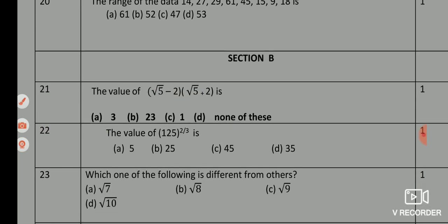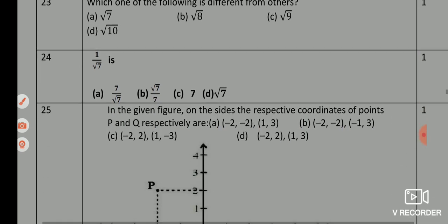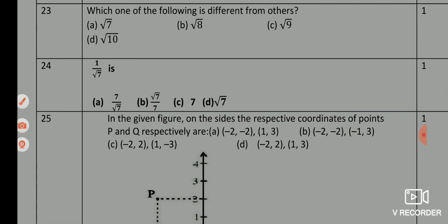Now Section B: Q21 — correct answer is option C, 1. Q22 — correct answer is option B, 25. Q23 — correct answer is option C, √9. Q24 — correct answer is option B, √7/7.